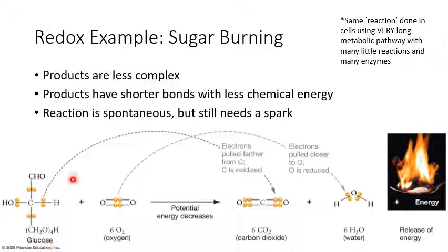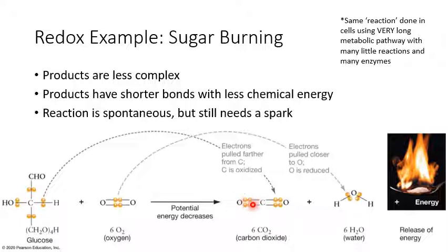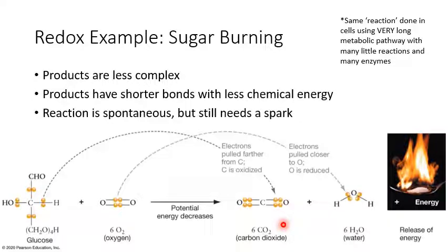Looking at chemical energy, glucose has a lot stored in its nonpolar covalent bonds. In the products, you don't have any more of those nonpolar covalent bonds. In general, longer bonds have more energy and shorter bonds have less energy. Nonpolar covalent bonds with electrons in the middle are always longer than polar covalent bonds. So we have reactants with more complicated structure and more energy in their bonds, and we end up with products that are simpler and have less energy in their bonds — which suggests this reaction is going to be spontaneous.